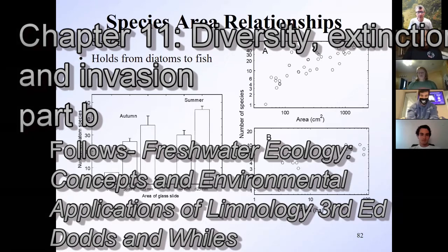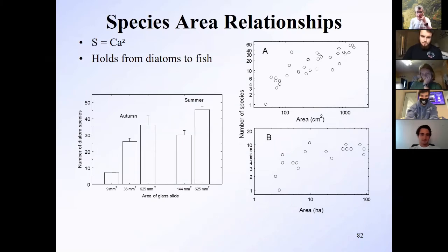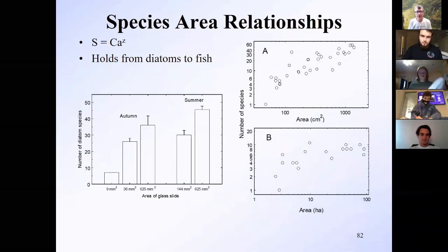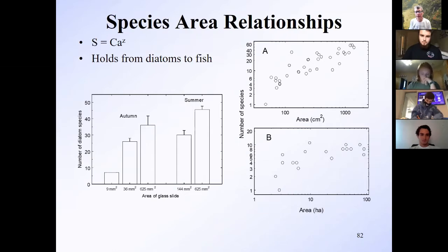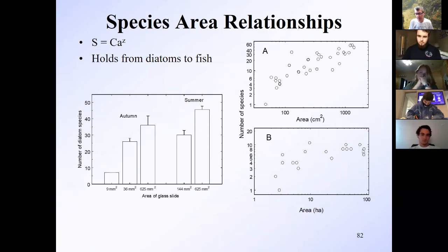The next subject in biodiversity factors influencing biodiversity is the relationship between number of species and area. This holds for many organisms — if you have some sort of insular habitat, an island, and you look at the area of it. This graph shows the area of lakes in the upper Midwest and the number of fish species.